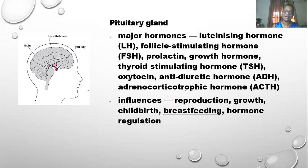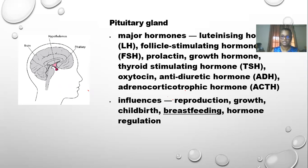The pituitary gland is located below the hypothalamus and the hormones it produces affect growth and reproduction. FSH controls the production of eggs and sperm in the human body. Oxytocin helps in regulating lactation, childbirth, and mother-child bonding — when the mother breastfeeds, it helps in bonding. Prolactin actually promotes breast milk production.